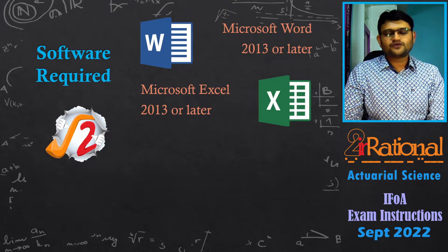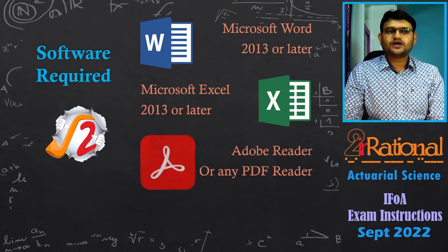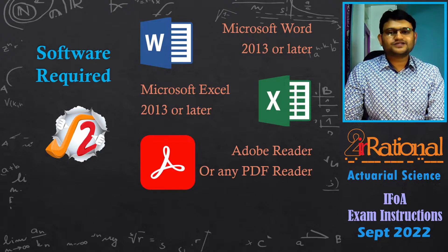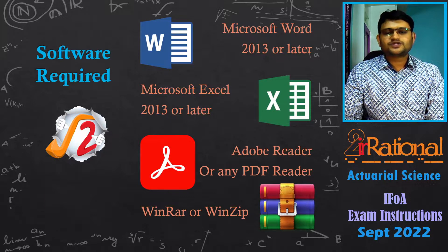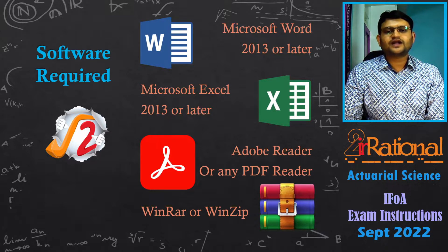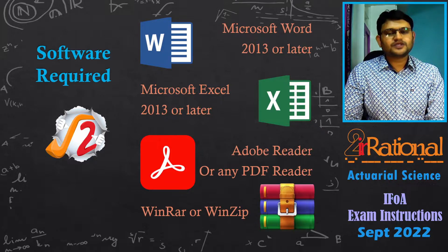Then we have a few free softwares. The examination question paper is given in PDF format, so you will have to download either Adobe Reader or any other PDF reader. Adobe Reader is free — you can search on Google and download it. The second one is Winrar or Winzip or any other compression software, because a few files might be compressed, especially for Paper B of CS1, CM1, CS2, and CM2. You will have to uncompress them, and you can download these from their respective websites.